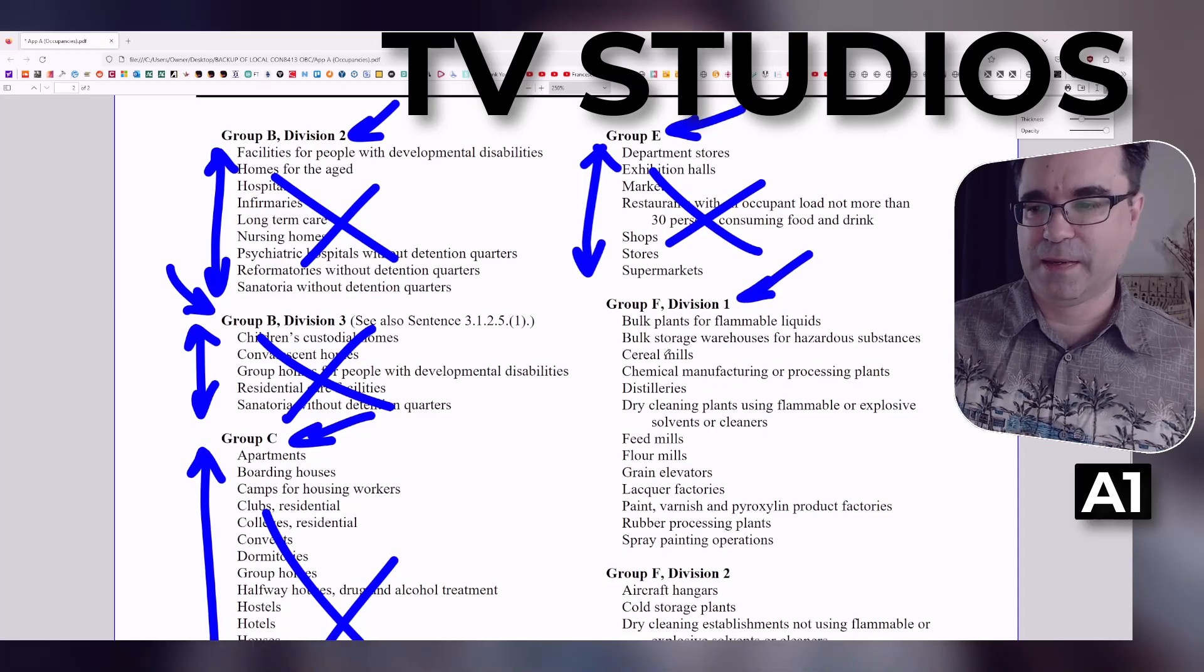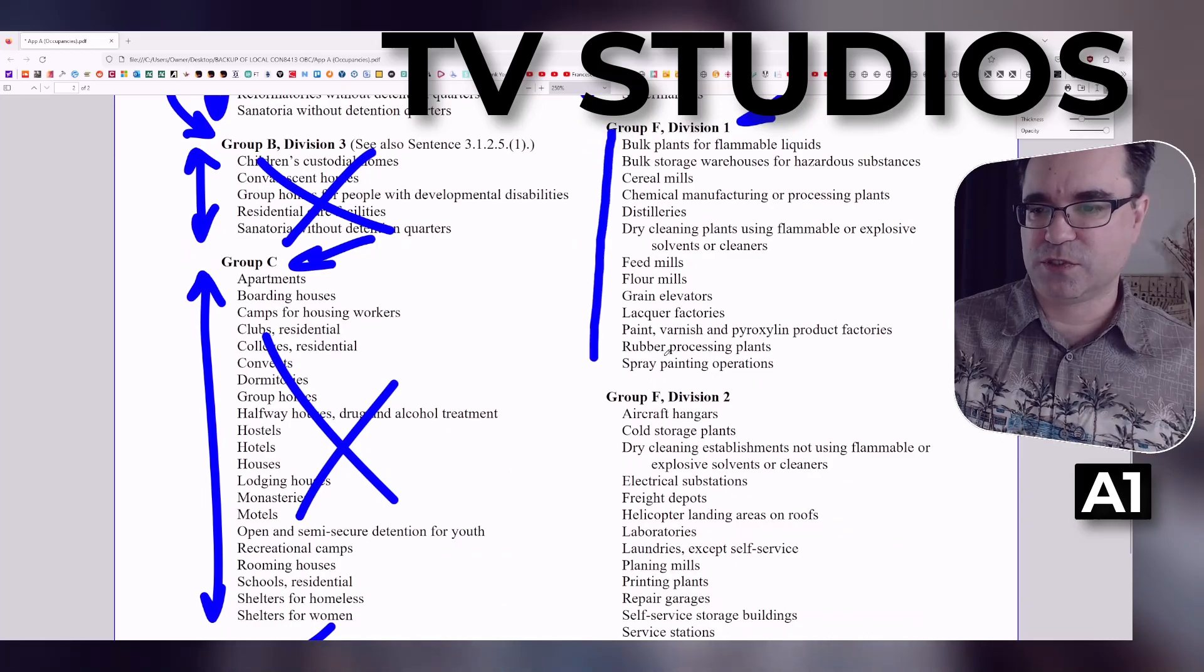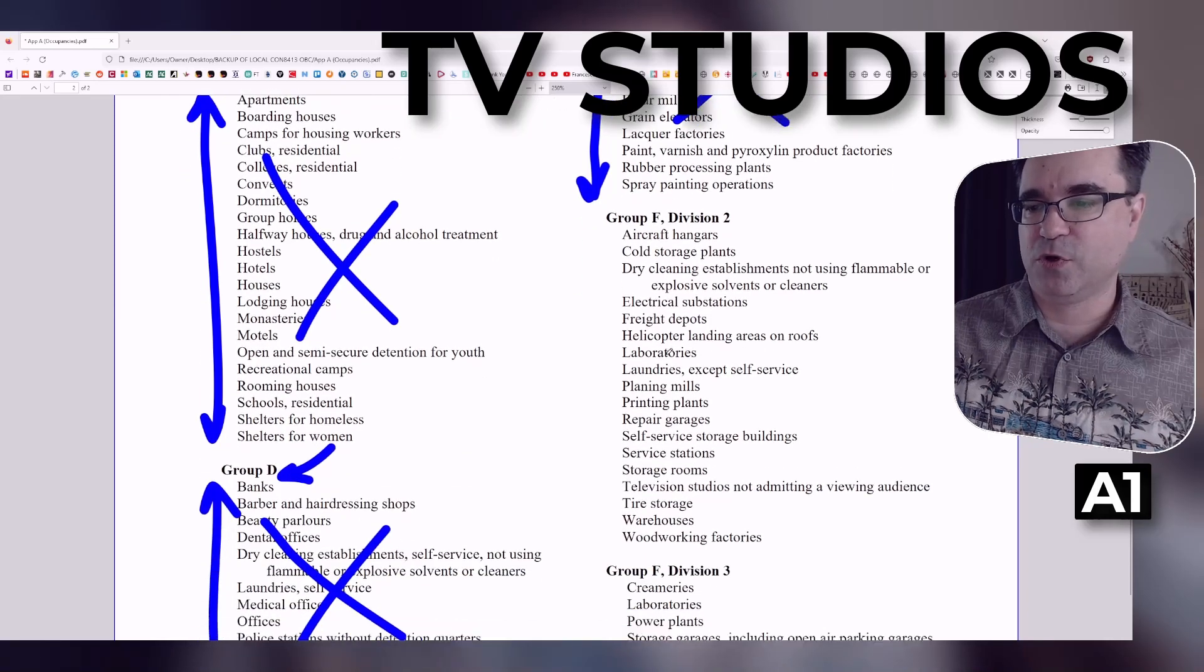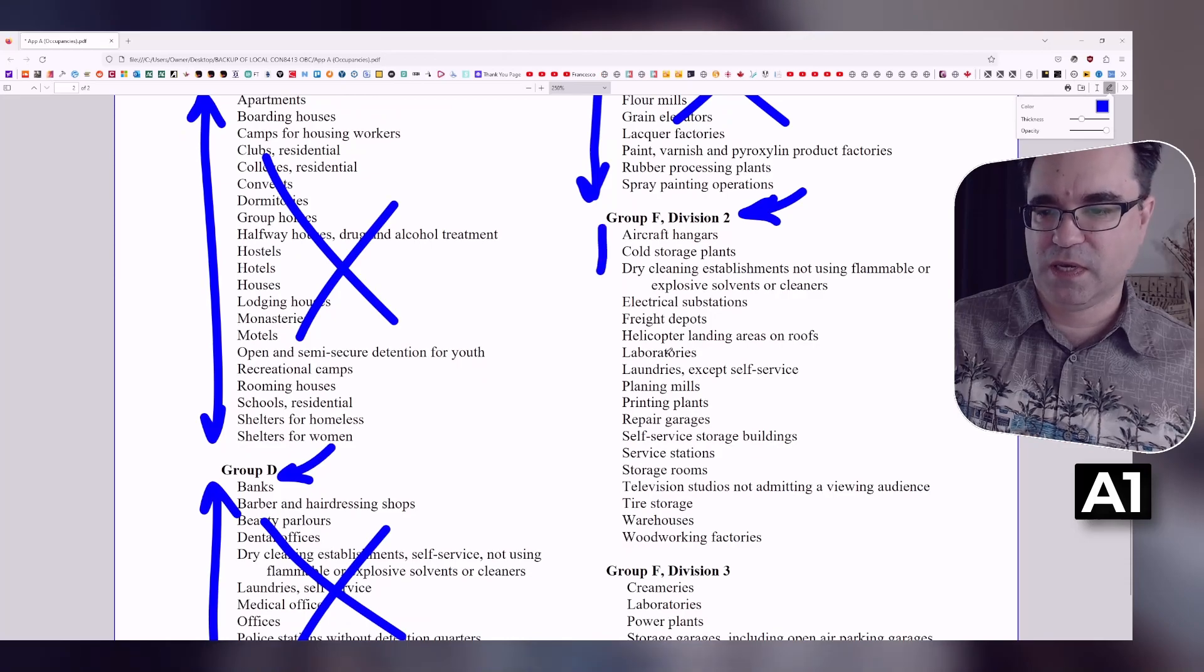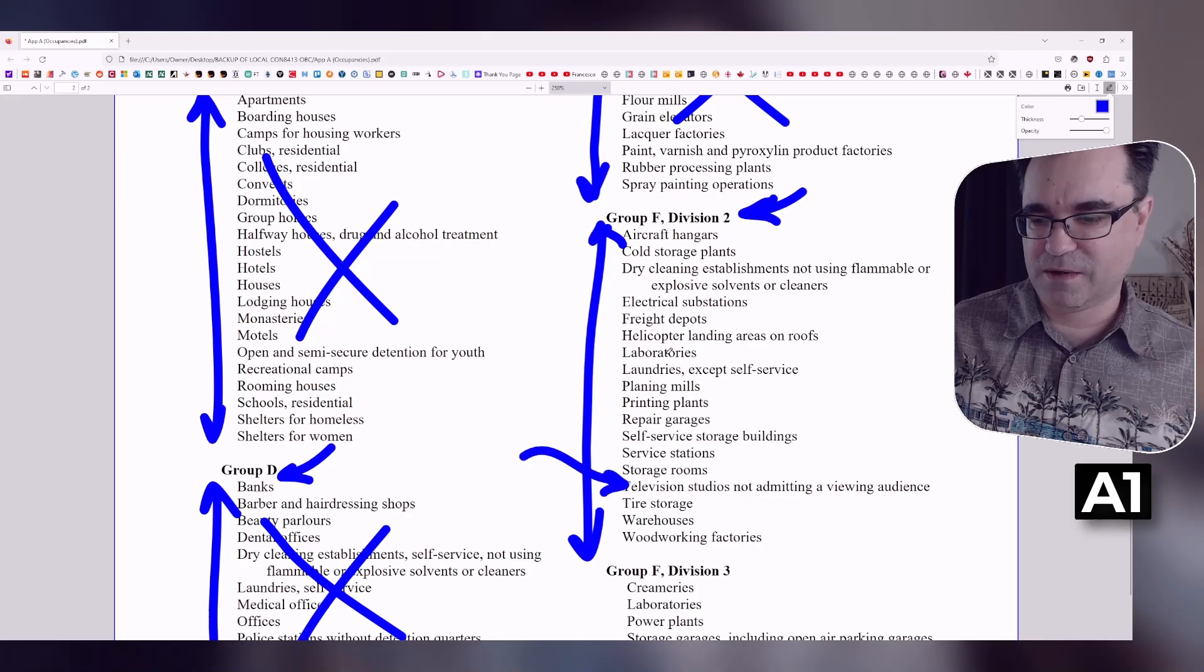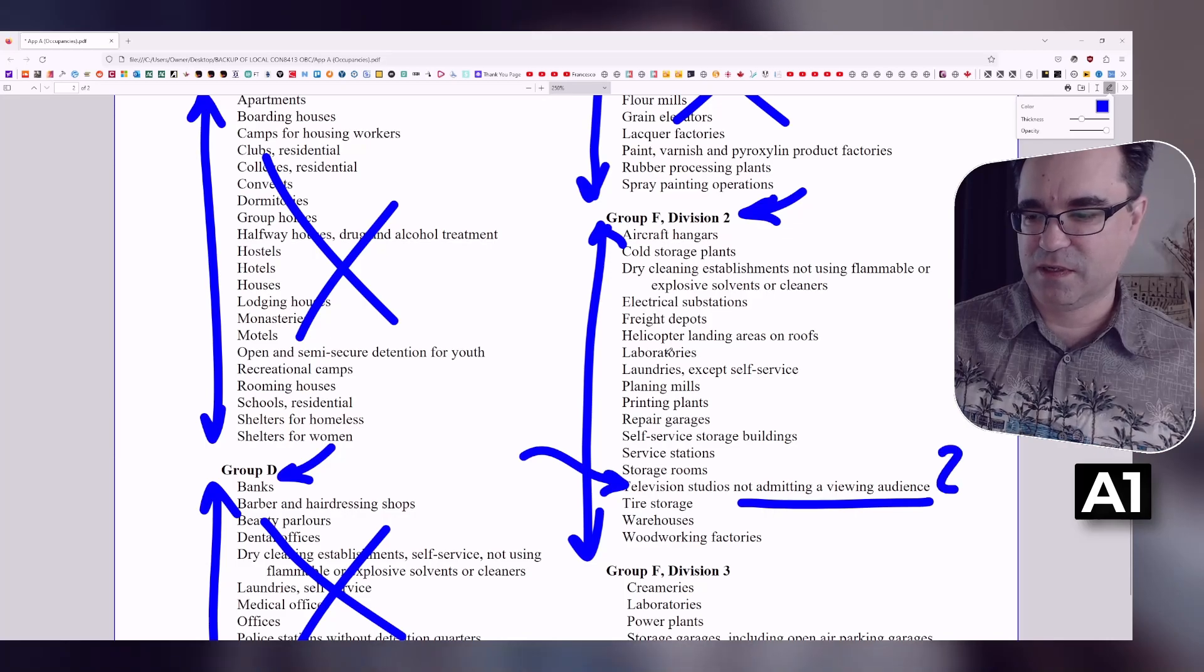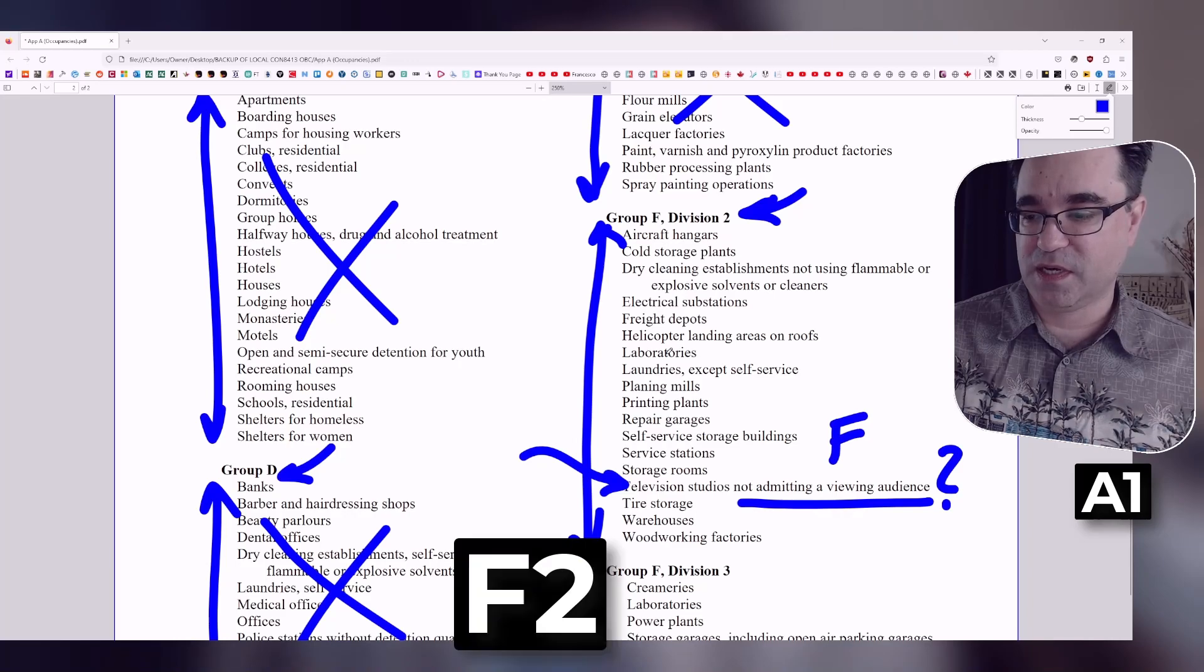How about F1? Industrial? Anything here? High hazard industrial. Television studios? I don't see anything. How about medium hazard industrial under F2? Television studios? Wait a minute. What did I just find here? Television studios not admitting a viewing audience. So this is a possibility. Could be F2.